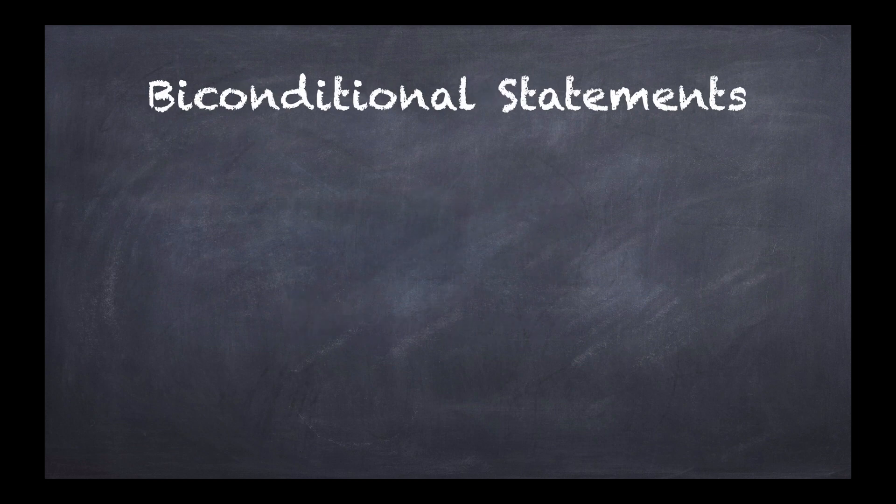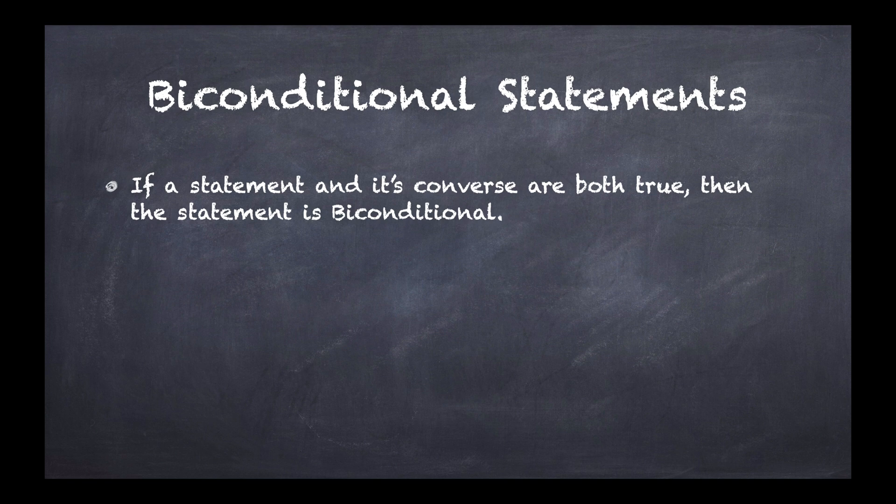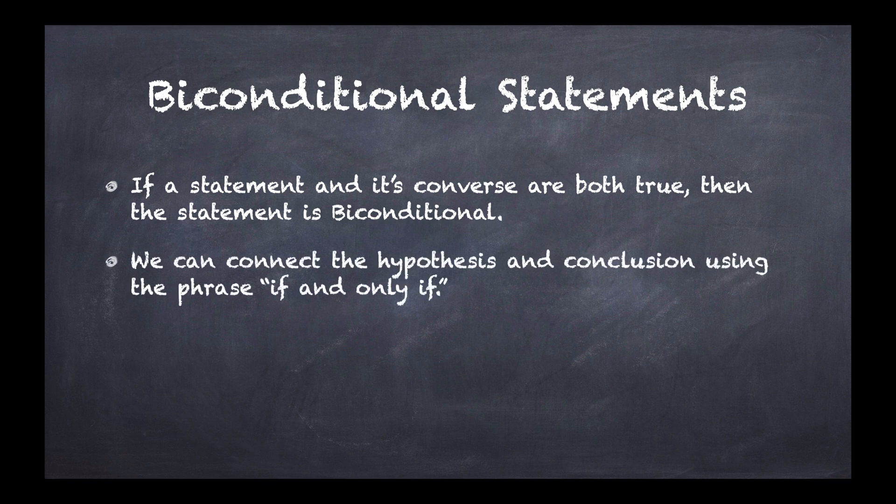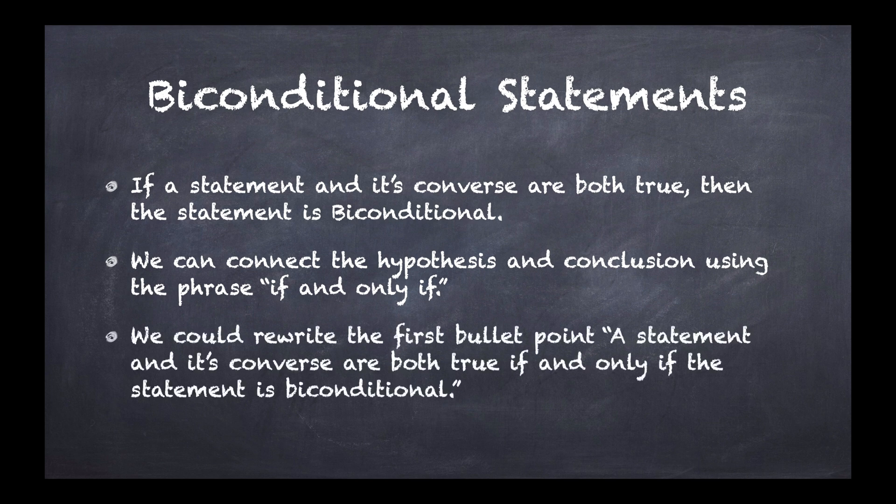All right, let's quickly talk about biconditional statements. If a statement and its converse are both true, then the statement is biconditional. So this would be one where all those four would end up being true. So we can connect the hypothesis and conclusion in biconditional statements by using the phrase if and only if. We could rewrite the first bullet point as: a statement and its converse are both true if and only if the statement is biconditional. So that is how we write a biconditional statement. Notice, we don't have the if then. It's now just one part, if and only if, the second part.